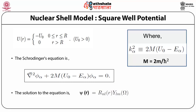The solution to this equation is ψ(r) = R_nl(r) · Y_l^m(ω). Since the wave function depends on the spherical polar coordinates r, θ, and φ, we use the concept of separation of variables. The total wave function is the product of the radial wave function R_nl — which depends on the principal quantum number n and orbital quantum number l — and the azimuthal wave function Y_l^m, which depends on orbital quantum number l and magnetic quantum number m.